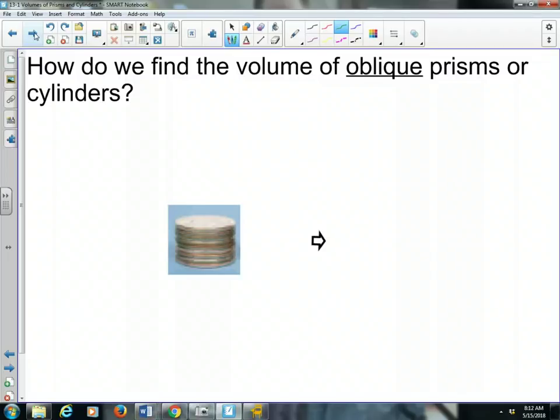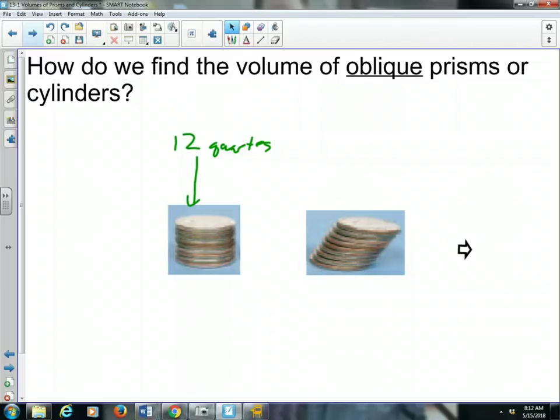What if we have an oblique prism or an oblique cylinder? Does our formula change? Let's say this is, oh, I don't know. Maybe it looks like, I'll just take a guess. Let's say this is 12 quarters. Does it change at all if I have a stack of quarters that looks like this? Wouldn't it still be 12 regardless whether it's stacked one on top of each other or whether it's slanted? So our formula doesn't change. Just keep in mind, this is the height of the prism. Right here, this is the height of the prism. Not this one or this one. The height is the perpendicular distance between the two bases. So you want the 90 degree angle, that perpendicular distance.